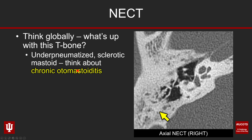This patient has an under-pneumatized and sclerotic appearance of their mastoid, denoted here by the yellow arrow. This mastoid is really dense, sclerotic, and poorly pneumatized. When you see that appearance, be thinking about a patient who has chronic otomastoiditis. That doesn't fully explain the hearing loss in and of itself, but it may be a contributing factor.